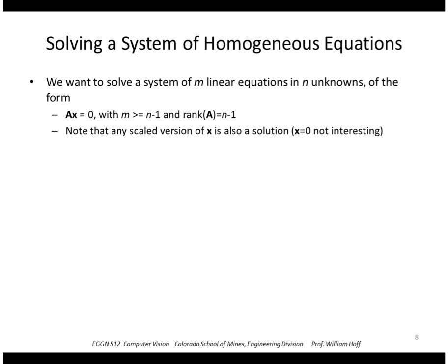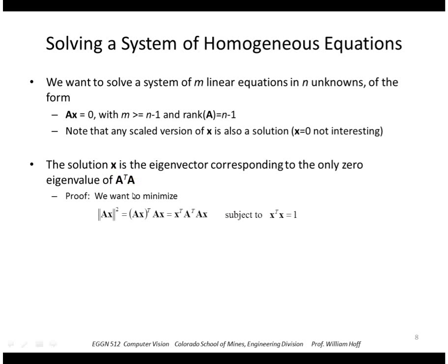So we're going to see that the solution that we want is the eigenvector corresponding to the only zero eigenvalue of A transpose A. Let's see why that's true. We want to minimize the square of the norm of this magnitude Ax. So multiplying through, (Ax) transpose times Ax gets us x transpose A transpose A times x.